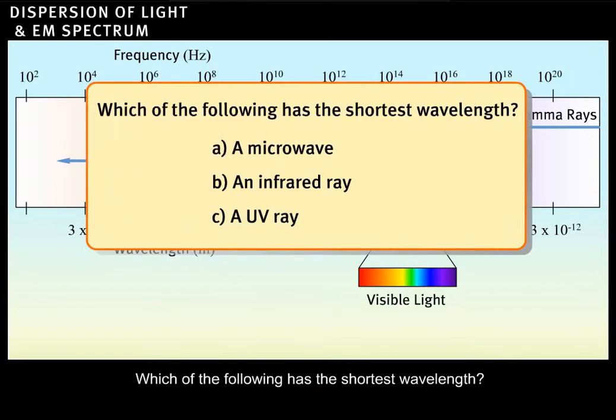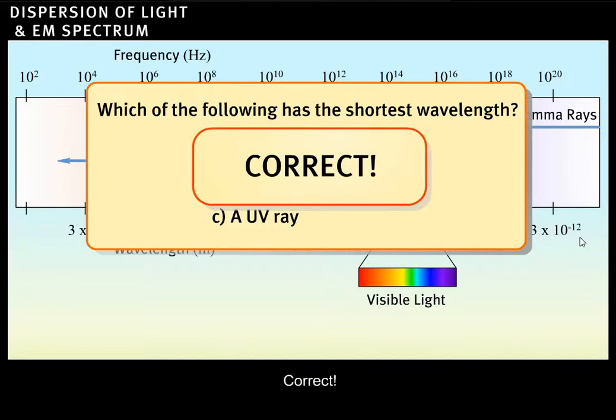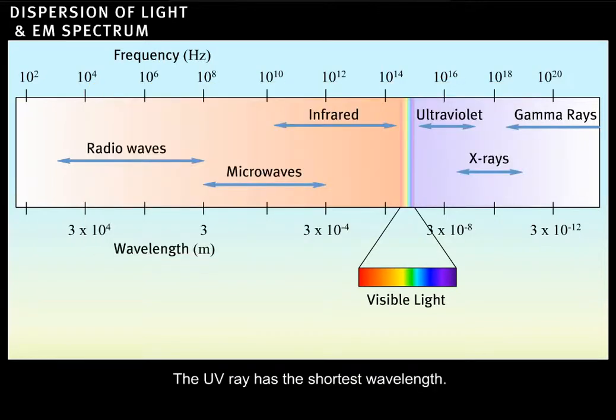Which of the following has the shortest wavelength? Correct. The UV ray has the shortest wavelength.